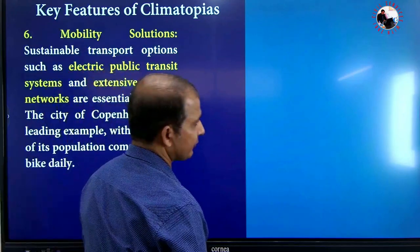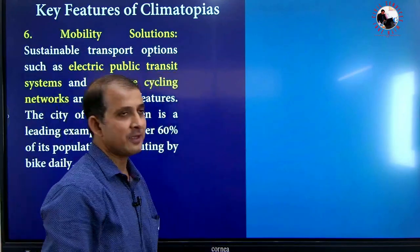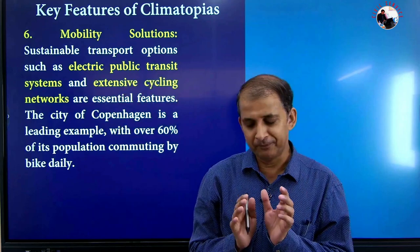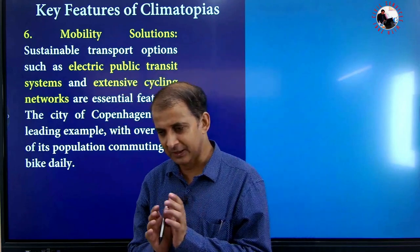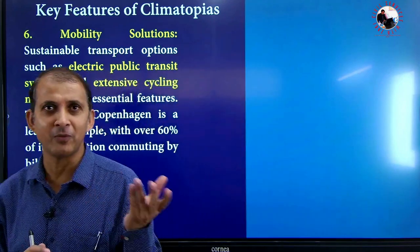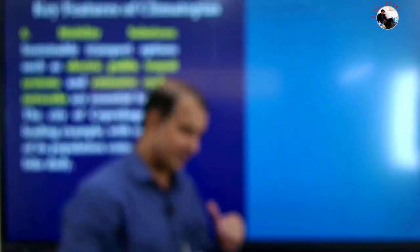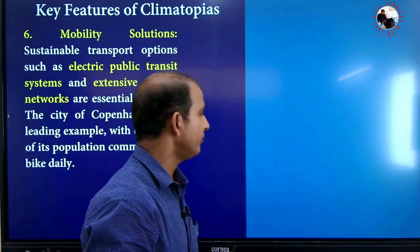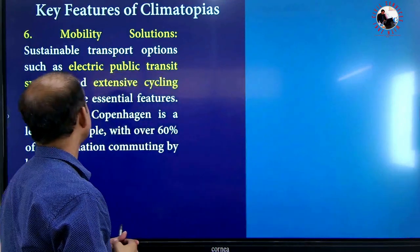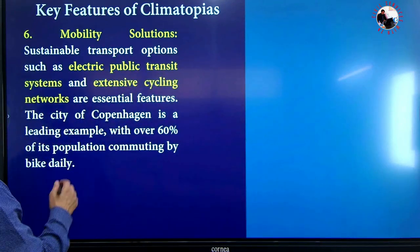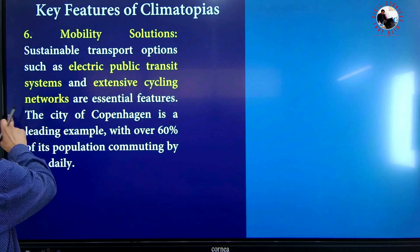Another key feature is mobility solutions. As we know, transport is one of the biggest contributors to global warming across the globe, whether city transport or otherwise. We need such types of mobility solutions like electric public transit systems and extensive cycling networks.